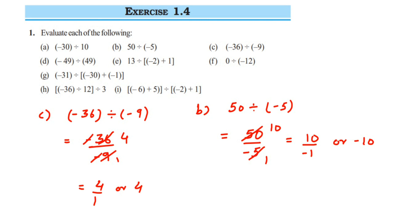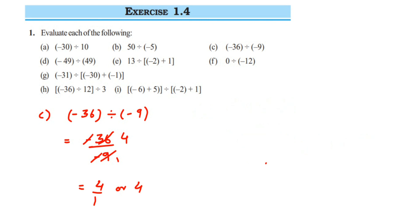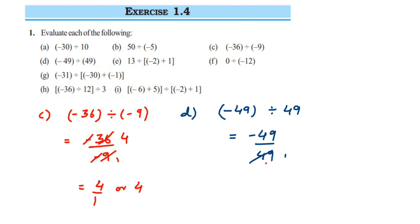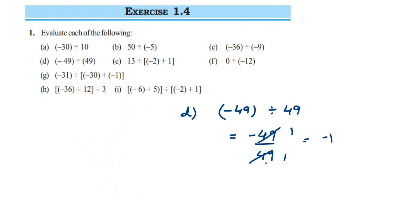Next: minus 49 divided by 49. Writing in fractional form: minus 49 divided by 49. They cancel — 49 ones are 49 — so we get minus 1 by 1, or you can write minus 1. There's only one negative sign, so we get a negative sign in the final answer: minus 1.